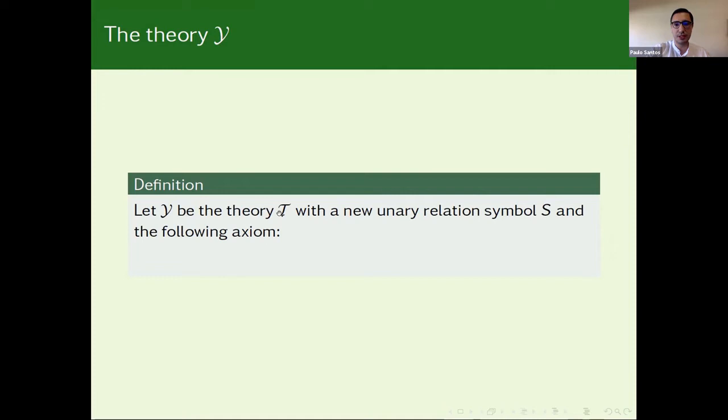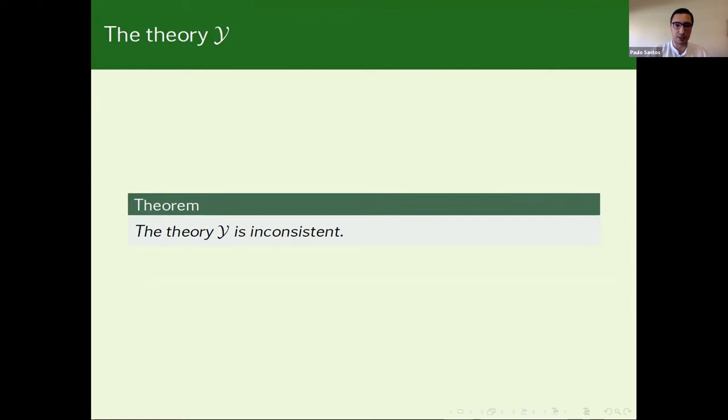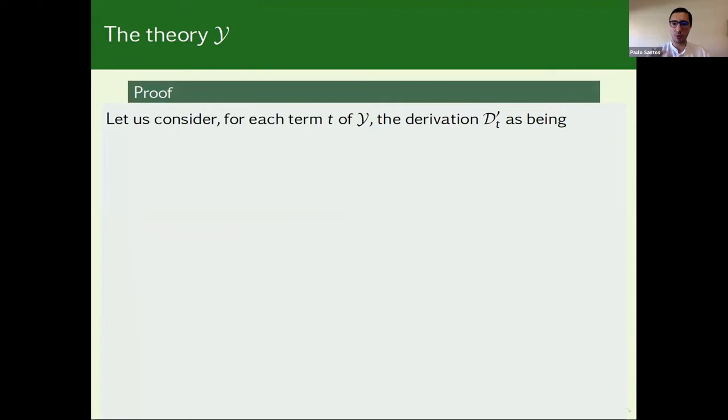And one very simple interpretation is to interpret this symbol as being the usual smaller relation in the natural numbers. So now, let us consider the theory Y as being the theory T. But now, I add a new relation symbol that I will denote by S, and this axiom. And this is simply the formal counterpart of schema Y from my introduction. Because we have S(X) is equivalent to for all k greater than X, not S(k). So we have a consistent theory T. We added an axiom. And in fact, this theory is inconsistent. So in this sense, we are expressing the paradox.